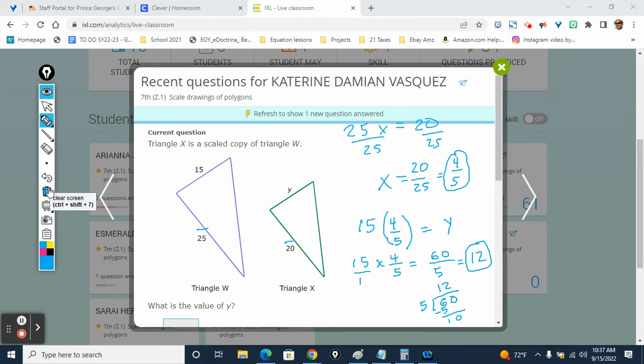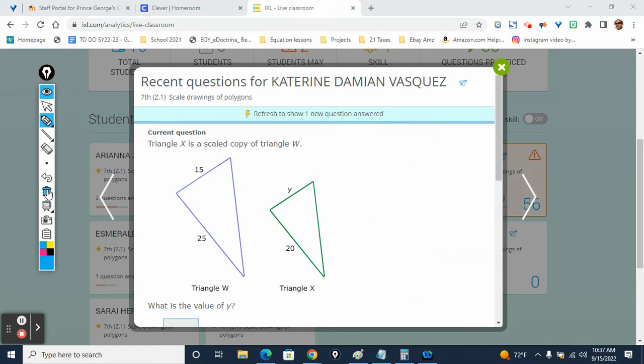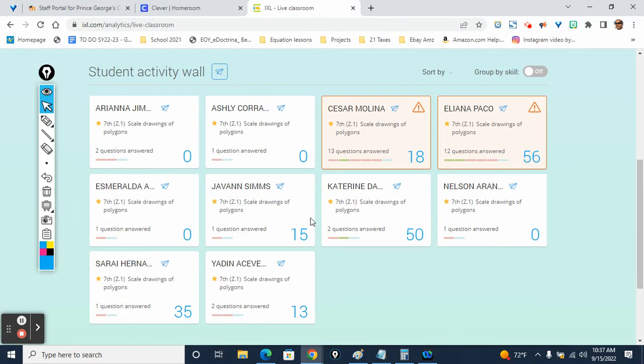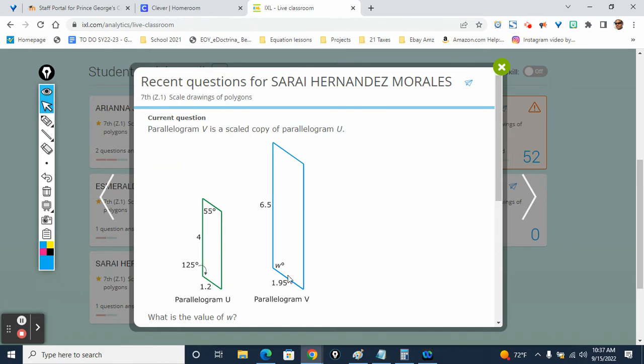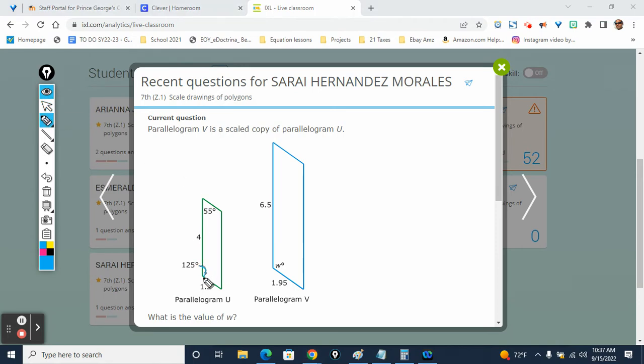All right you got that okay. Boom if I wasn't making a video I would make y'all copy the notes. Who am I helping next? So you got it. All right that's 125 because these angles are corresponding so this angle is the same as this angle. If that angle is 125 then this angle is 125. Put that in and let's see what the next question is.